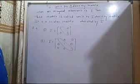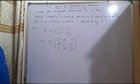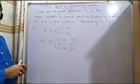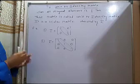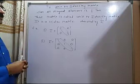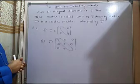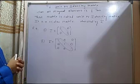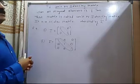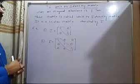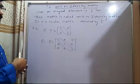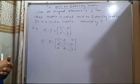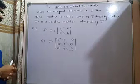The sixth type is the unit or identity matrix. This is a special scalar matrix where all diagonal elements equal 1. When all diagonal elements are 1 and the rest are 0, that matrix is called a unit or identity matrix. It is denoted by I. For example, I equals the matrix with 1s on the diagonal and 0s elsewhere.